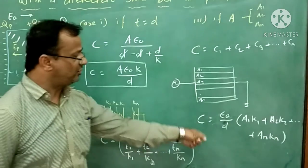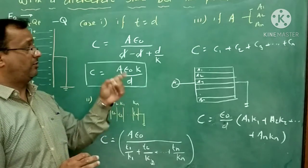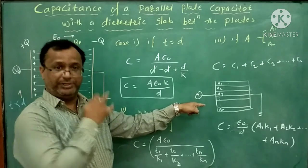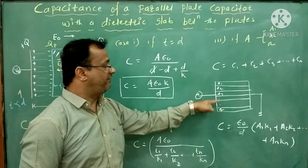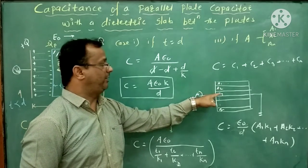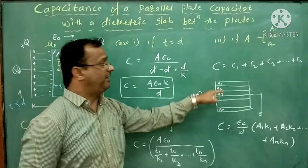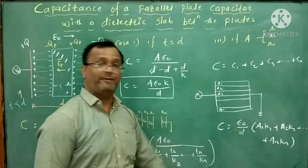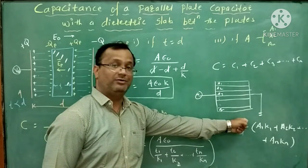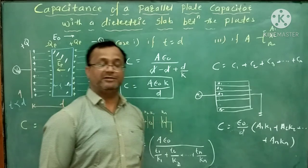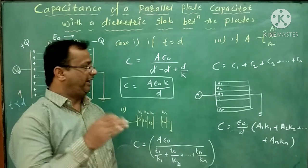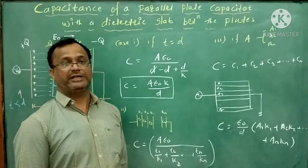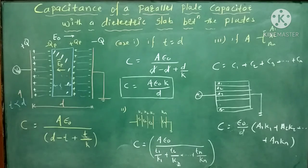So this is the last case. The area of the capacitor plate is divided into A1, A2, A3, ... An, using different dielectric slabs. Then the effective capacitance is C = (ε₀/D) × (A1·K1 + A2·K2 + ... + An·Kn). See all the equations.